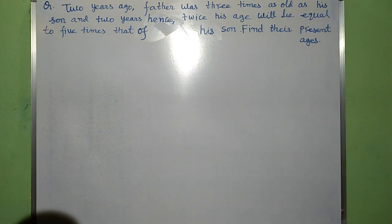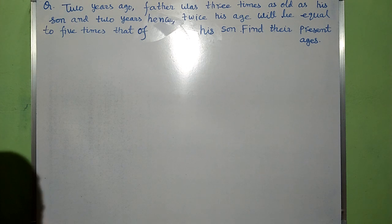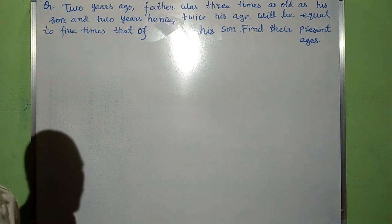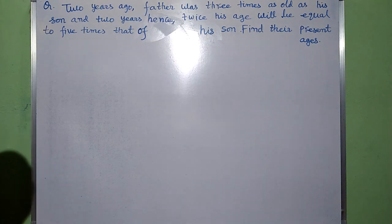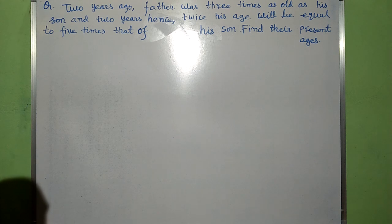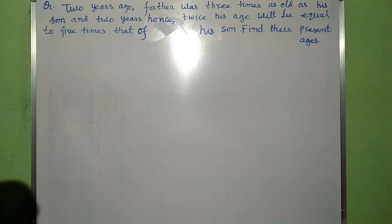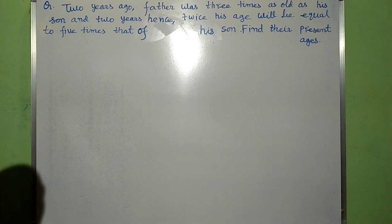Namaste everyone. Here I am going to solve one question which is related to linear equation in one variable. The question runs like this: 2 years ago, father was 3 times as old as his son. And 2 years hence, twice his age will be equal to 5 times that of his son. Find their present age.